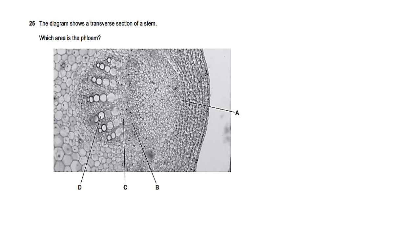Question twenty-five: you need to know the structures of stems, leaves, and roots for this question. The answer is B — that is where you would find the phloem cells.